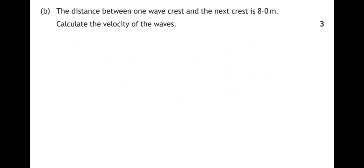Part B. The distance between one wave crest and the next crest is 8 meters. Calculate the velocity of the waves. So we've already got, from the previous question, the frequency. The distance from one crest to the next is the wavelength. So we can use our formula V equals F lambda, so speed equals frequency times wavelength, to find the speed or the velocity. So our frequency, 0.4 times 8 meters, gives us 3.2 meters per second.